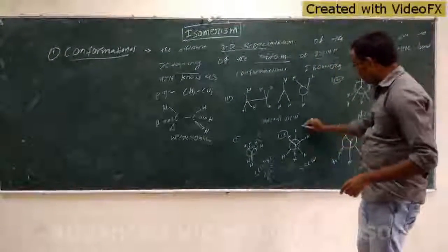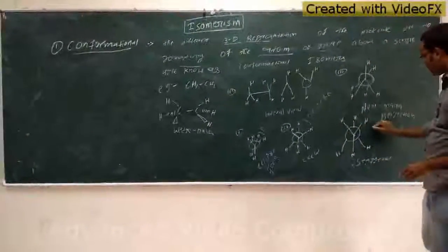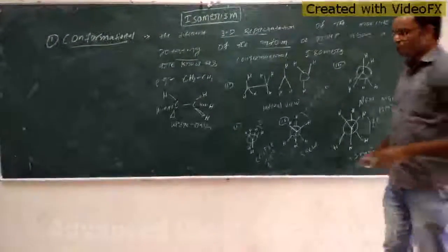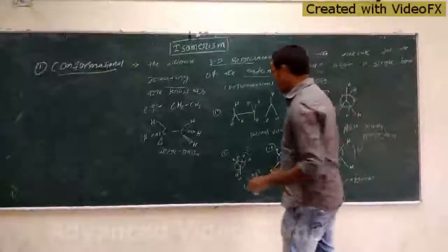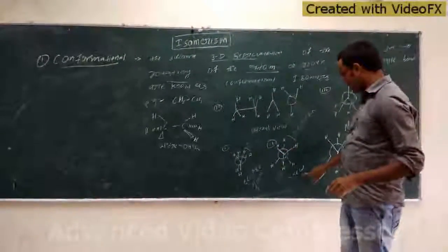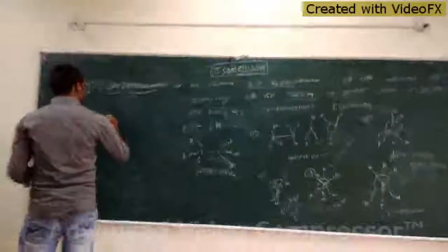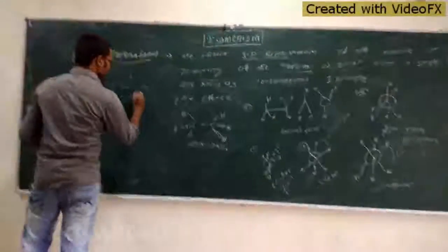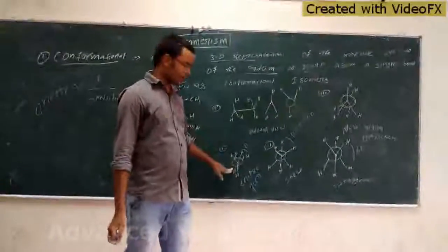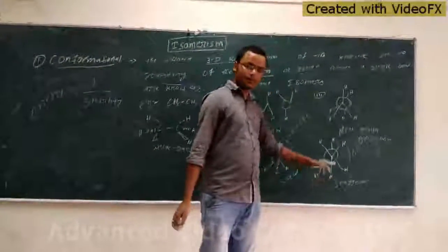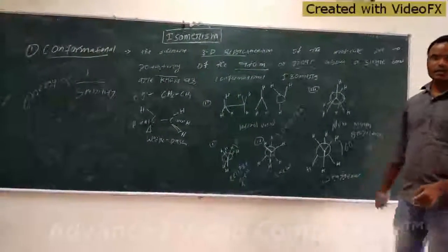In the eclipsed form, the angle between the two groups is 0 degrees, and in the staggered form, the angle between them is 60 degrees. The eclipsed form has more torsional strain so it is less stable, whereas the staggered form has less torsional strain and is more stable. Thank you for watching this video.